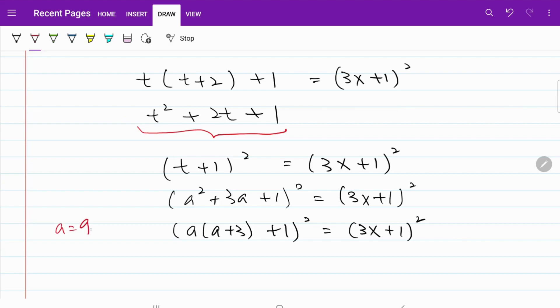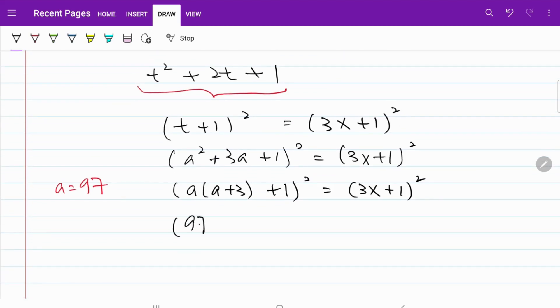Keep in mind, a is equal to 97, so if I put back 97 into the left-hand side, what I have now is 97 multiplied by 97 plus 3, which is 100 plus 1 square is equal to 3x plus 1 square. In other words, I have 3x plus 1 square is equal to 97, 9,701 square.